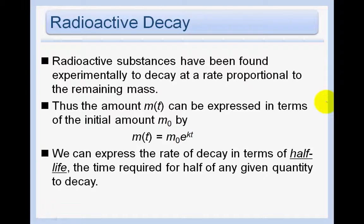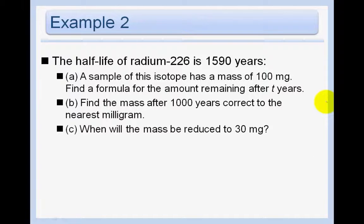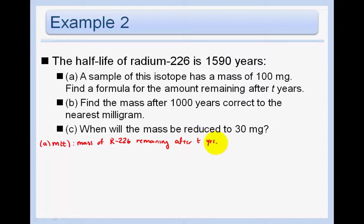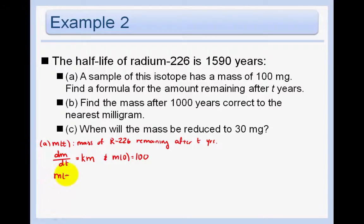The half-life of radium-226 is 1,590 years. A sample of this isotope has a mass of 100 milligrams. We know that m(t) is the mass of Ra-226 remaining after t years. Since dm/dt = km with initial mass m₀ = 100, this is just like population growth. So m(t) = m₀e^(kt) = 100e^(kt).